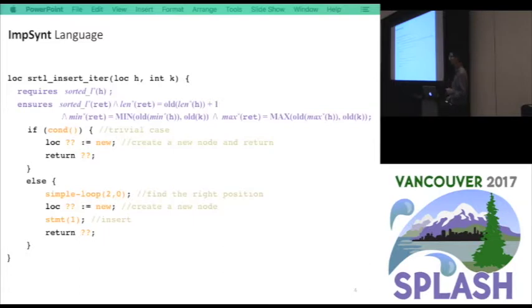Basically, the template says there are two branches, two cases. In the trivial case, the node will be the head of the list, and that's it. Otherwise, in the non-trivial case, you need to go through the list to find the location to do the insertion, and then just do the insertion. So this is just a template without implementation details.